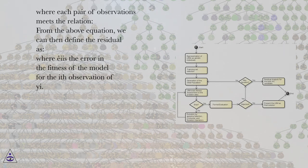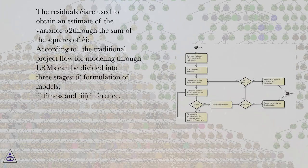Where εi is the error in the fitness of the model for the ith observation of Yi. The residuals εi are used to obtain an estimate of the variance sigma squared through the sum of the squares of εi.